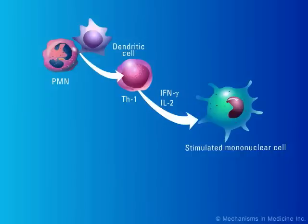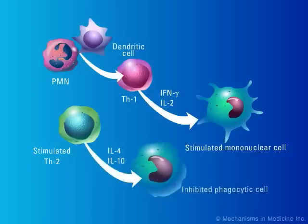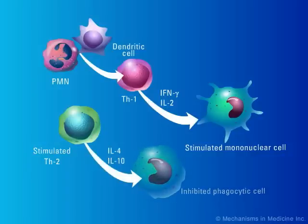On the other hand, downregulation of phagocytosis occurs through the stimulation of Th2 lymphocytes. The Th2 cells secrete interleukin-4 and interleukin-10 that inhibit phagocytosis.